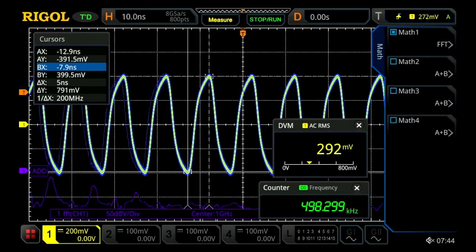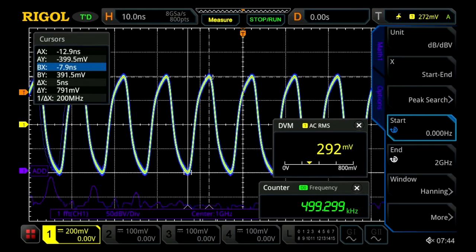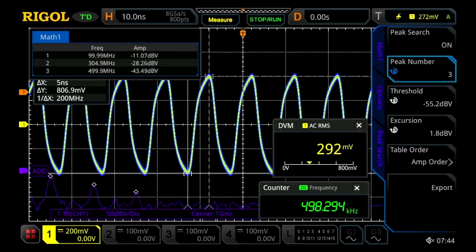We can go further into the FFT function, set up the peak search, capturing the peak values for the three harmonic peaks on that signal.